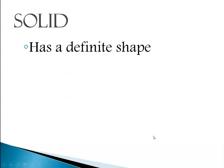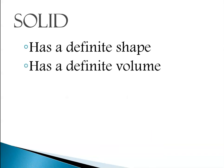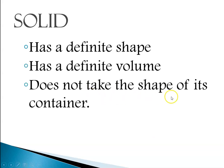So let's do this one at a time. Solid: solids have a definite shape, they have a definite volume, they do not take the shape of their container, they stand alone.